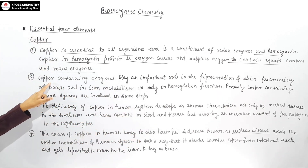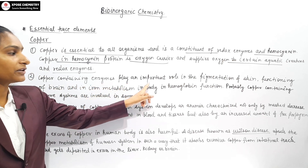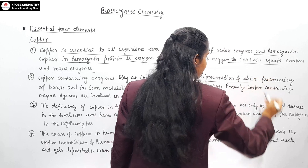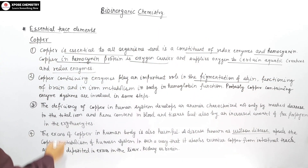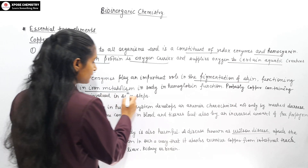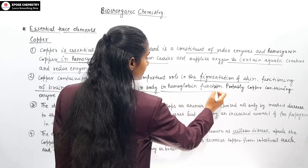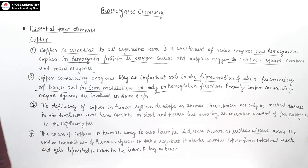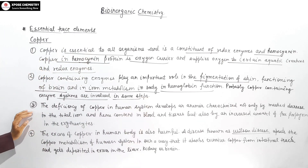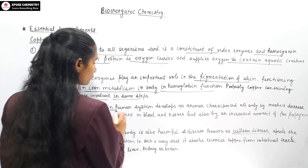Copper-containing enzymes play an important role in pigmentation of skin, functioning of the brain, iron metabolism in the body, and hemoglobin function.